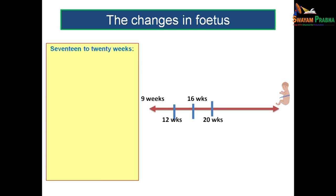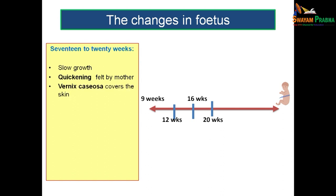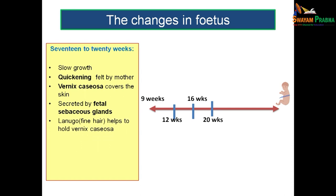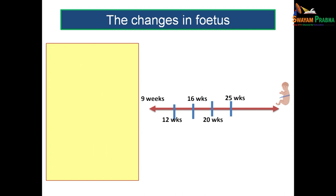From 17 to 20 weeks, there is a slowing down of growth, but quickening — the first feeling of fetal movement — will be felt by the mother. The fetus becomes covered by vernix caseosa, secreted by the fetal sebaceous glands. The fetus is also covered by fine hair called lanugo, which helps hold the vernix caseosa in position. Brown fat is also formed toward the end of this period.